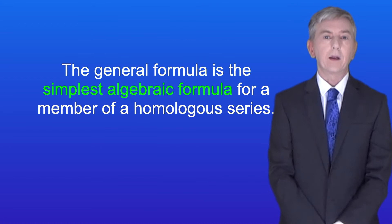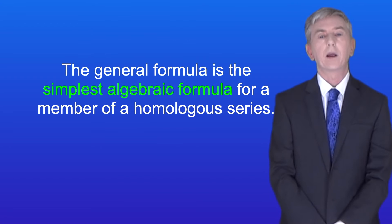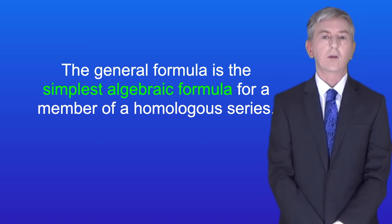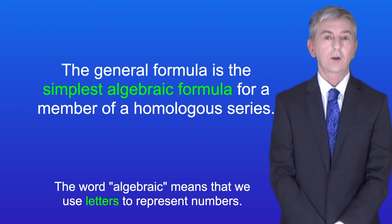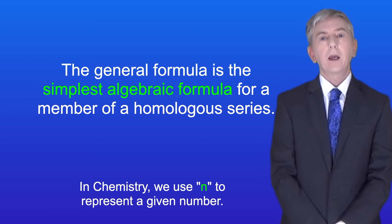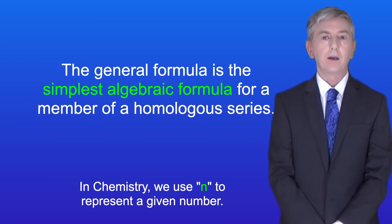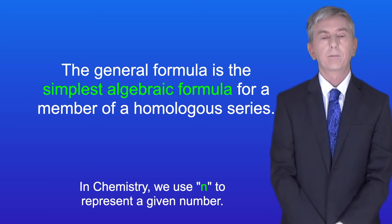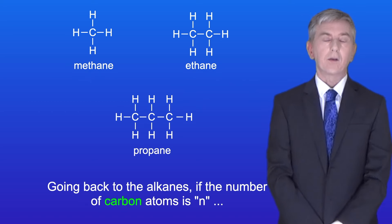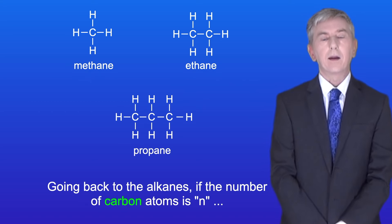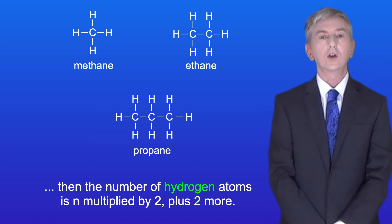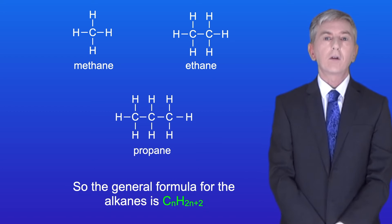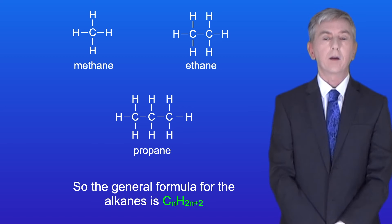Now the general formula is the simplest algebraic formula for a member of a homologous series, and the word algebraic means that we use letters to represent numbers. In chemistry we use lowercase n to represent a given number. Going back to the alkanes, if the number of carbon atoms is n then the number of hydrogen atoms is n multiplied by 2 plus 2 more. So the general formula for the alkanes is CnH2n+2.